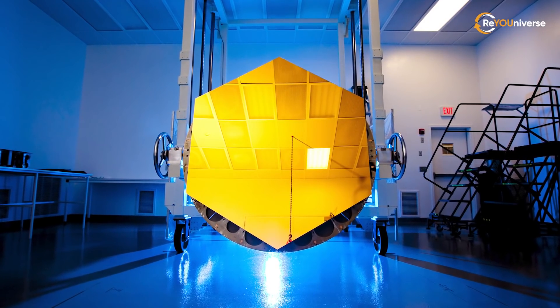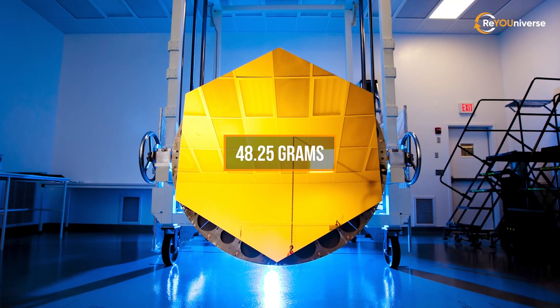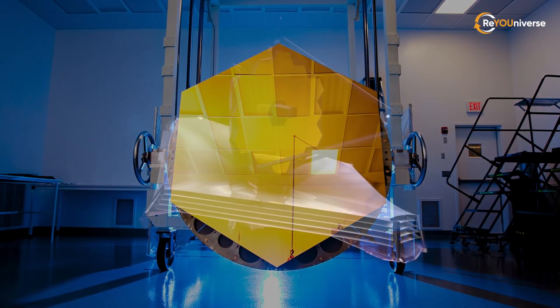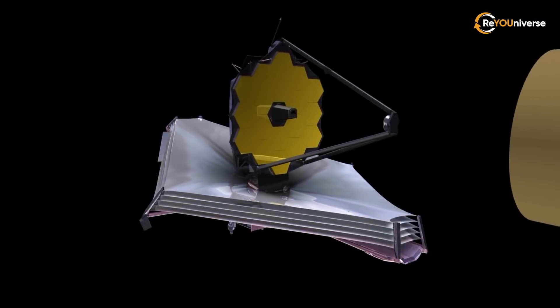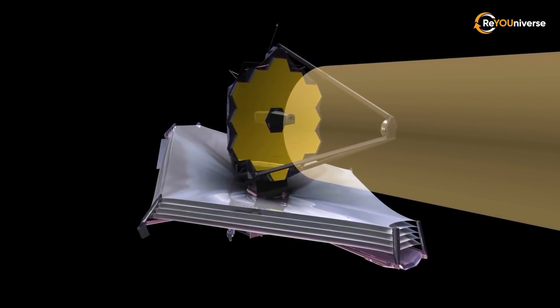With only 100 nanometers, its gold layer is unusually thin, and the total weight of the coating is only 48.25 grams. A secondary convex mirror is installed on a special mount in front of a set of 18 segments of the main mirror.